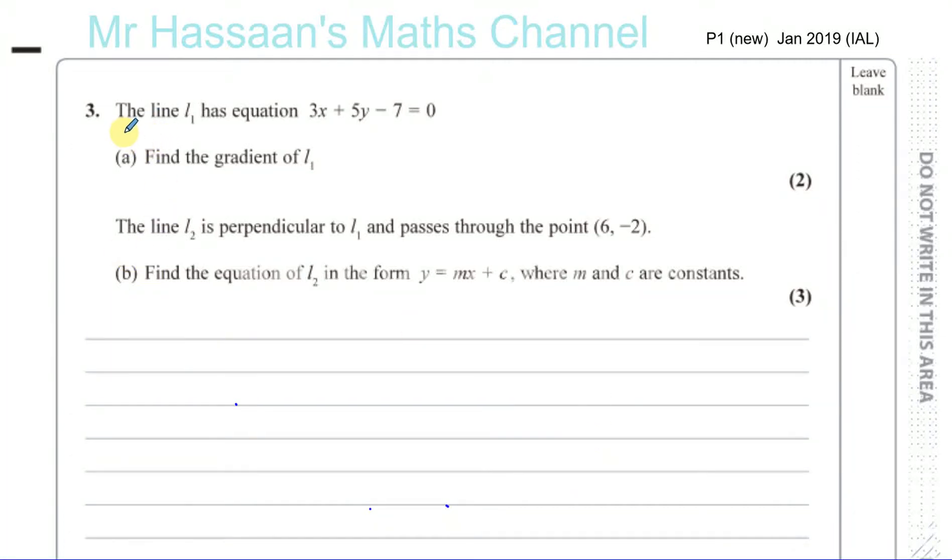Okay, now question number three from the new P1 paper from January 2019 International A-Level Edexcel. We have a question which tells us about line l1, and the line l1 has an equation 3x plus 5y minus 7 equals 0.